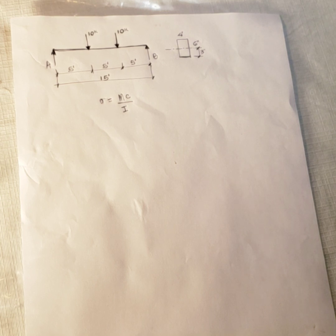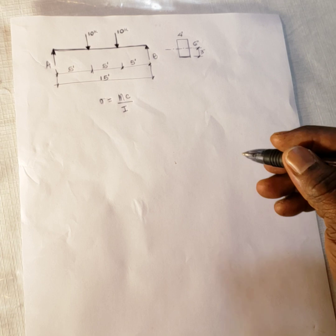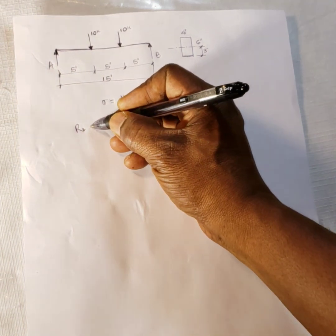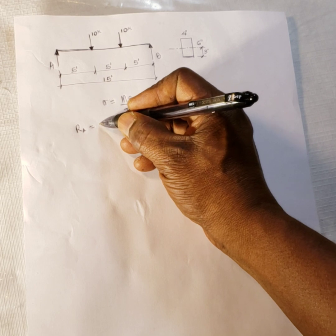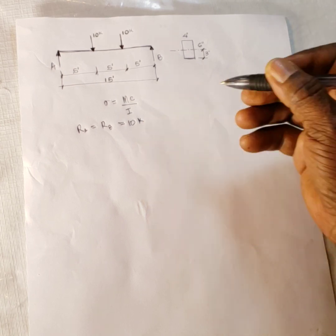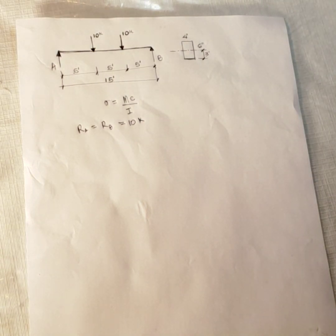So you can see by inspection and by symmetry that the reaction at A is equal to the reaction at B, which will be ten kip each. So the reaction at A is equal to the reaction at B, which is equal to ten kip. So you don't have to do any calculation here. It's very straightforward.